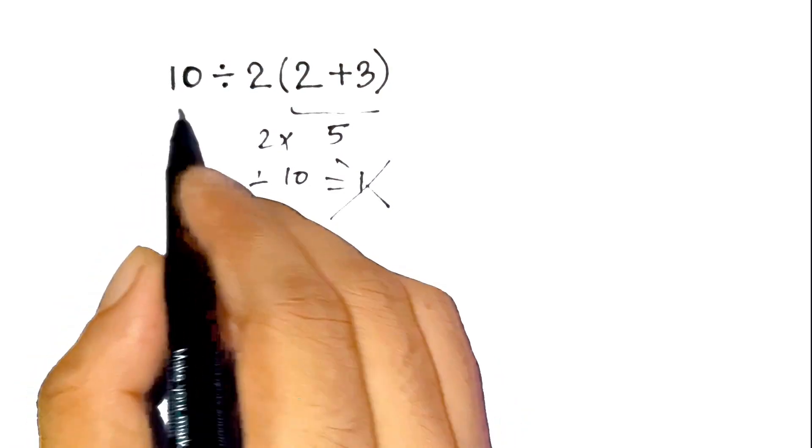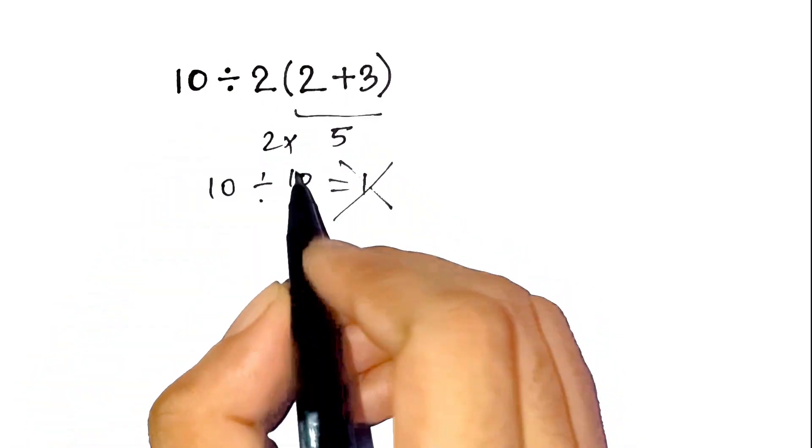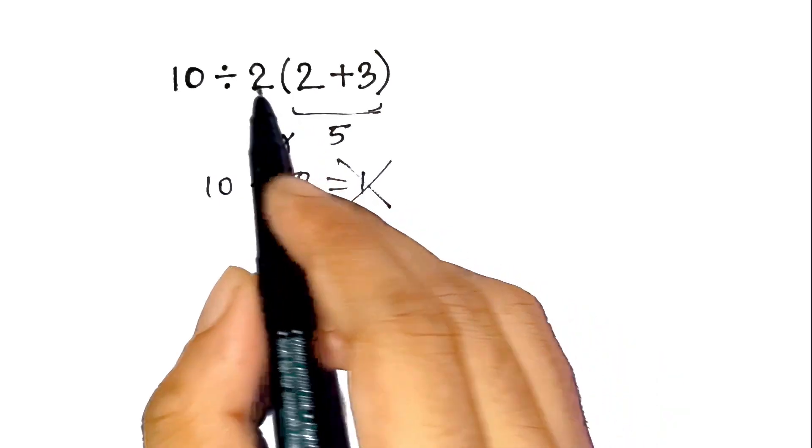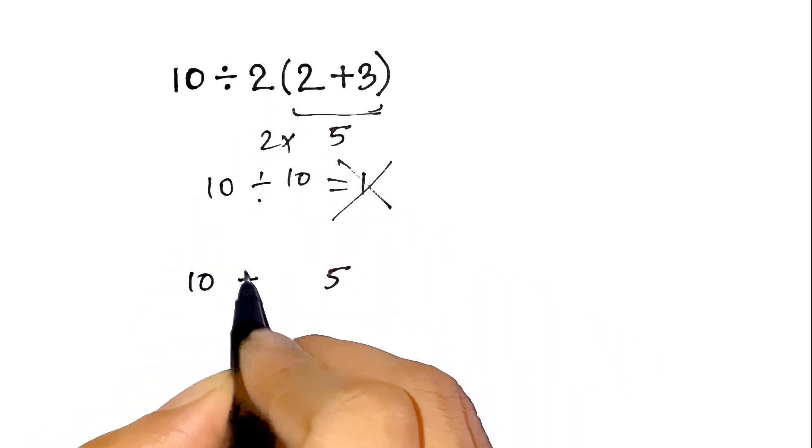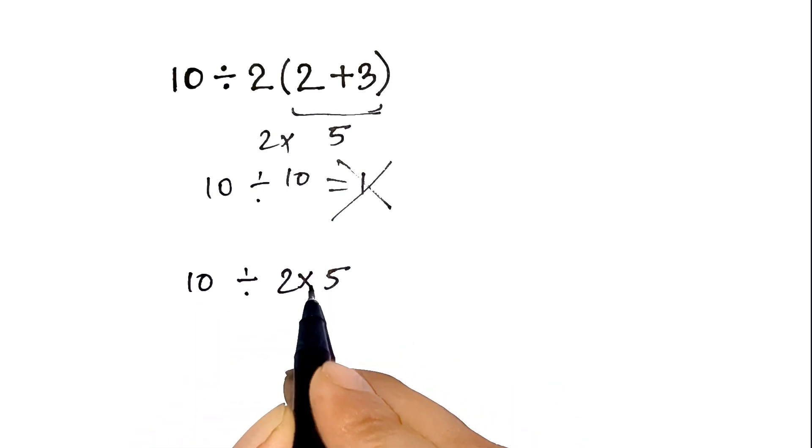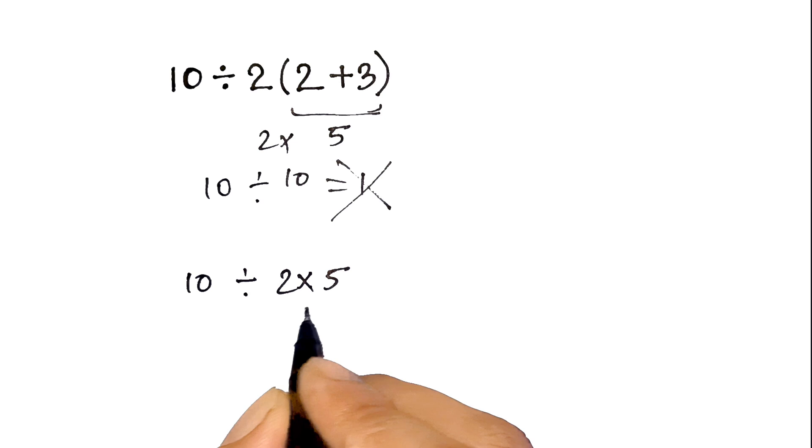So let's carefully redo this. We start with the parentheses. 2 plus 3 equals 5. Now the expression becomes 10 divided by 2 times 5. Here we have one division and one multiplication. Both have the same priority, so we go left to right.